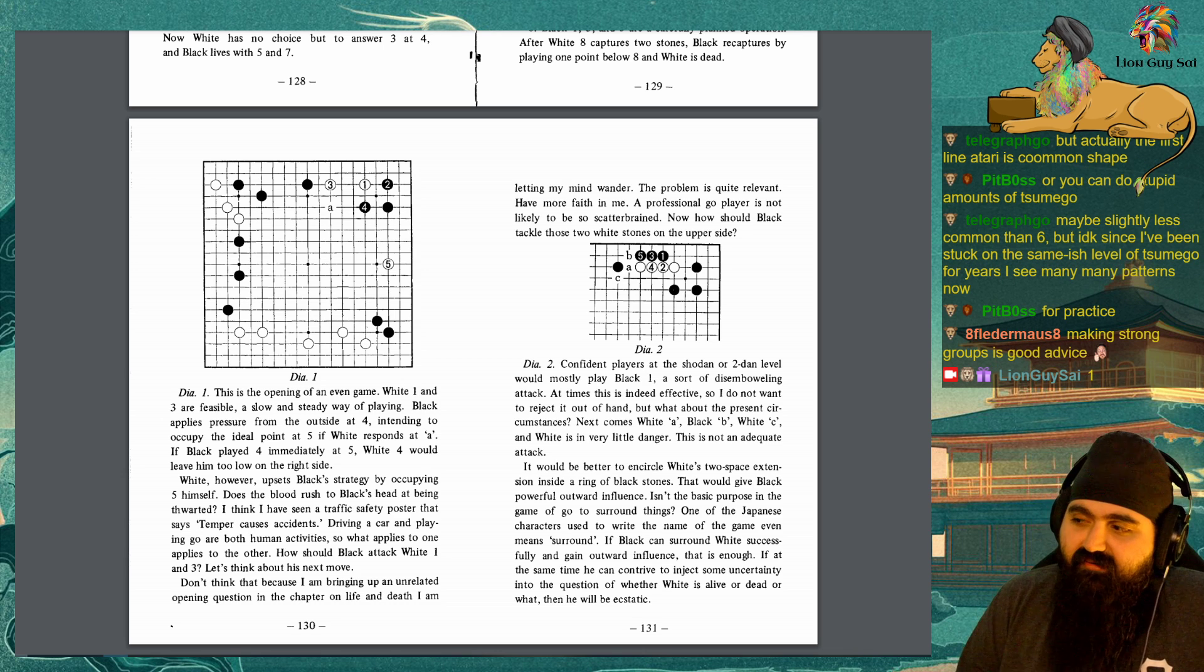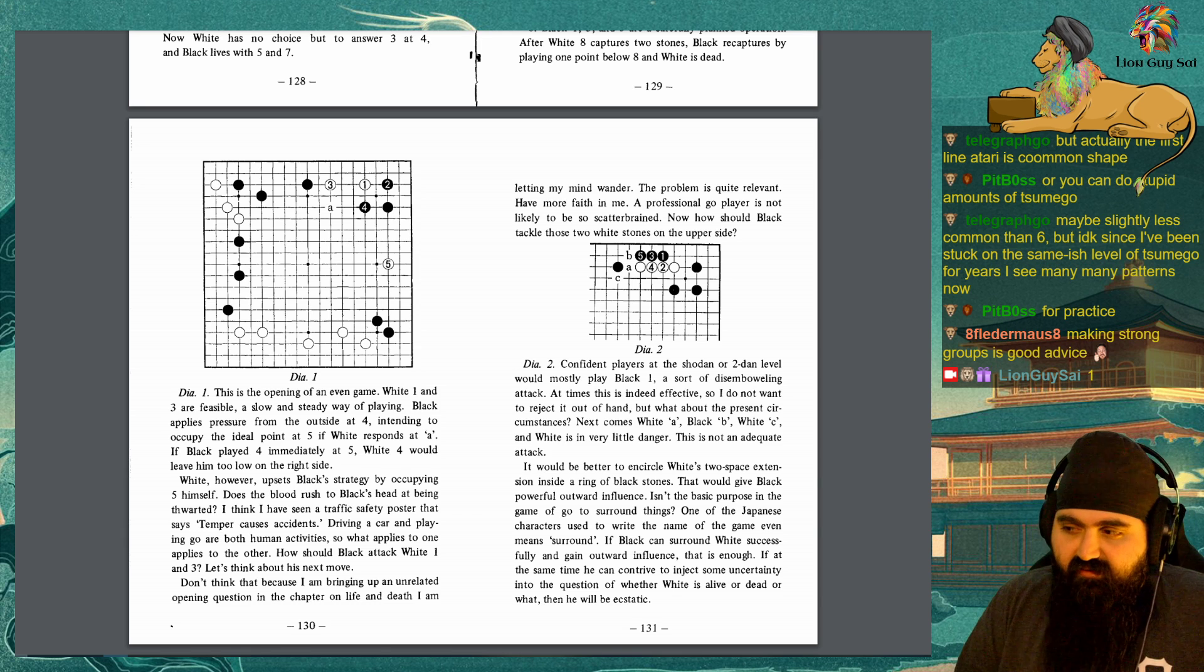Diagram 2: Confident players that the Shodon or Tudon level would mostly play Black 1, a sort of disemboweling attack. At times this is indeed effective, so I do not want to reject it out of hand. But what about the present circumstances? Next comes White A, Black B, White C, and White is in very little danger. This is not an adequate attack. It would be better to encircle White's two-space extension inside a ring of Black stones. That would give Black powerful outward influence. Isn't the basic purpose in the game of Go to surround things?